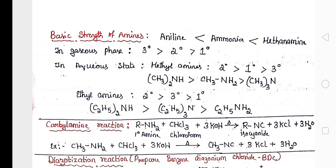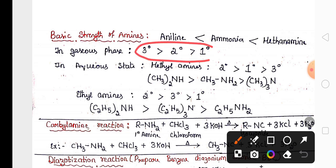In gaseous state, tertiary amines are more basic because they have three electron donating groups. And primary amines are less basic because they have only one electron donating group.